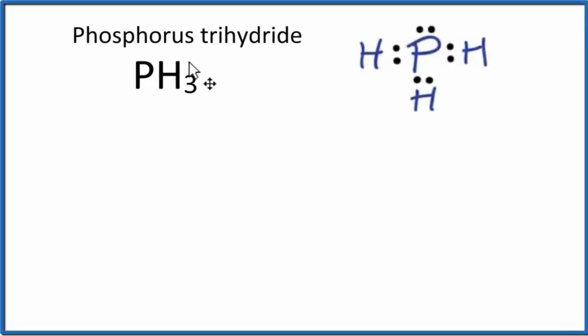Let's take a look at the molecular geometry for PH3, phosphorus trihydride. So we have a Lewis structure here for PH3. You can see we have three hydrogens, and then we have this lone pair here.